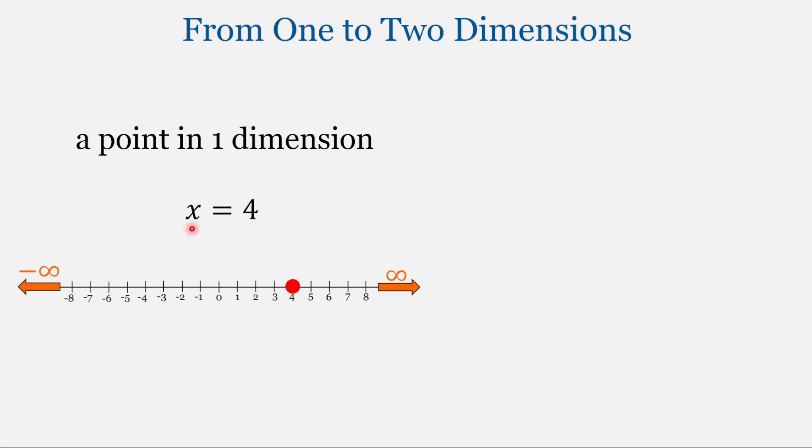But what is one dimension? We can view one dimension as a train on a track. It can move forward and backwards along that track, but it can't go side to side.